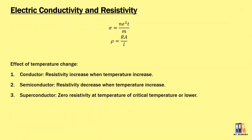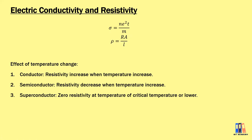Now we proceed to conductivity and resistivity. We have learned how to derive σ = Ne²τ/m, and make sure you still know how to derive this formula. We also have resistivity ρ = Ra/L. The relationship between conductivity and resistivity is that they are reciprocals of one another — σ = 1/ρ and ρ = 1/σ. This depends on the question you may need to solve.